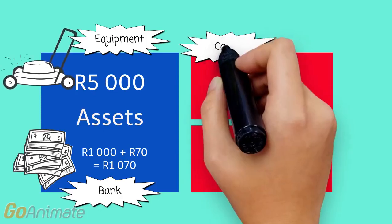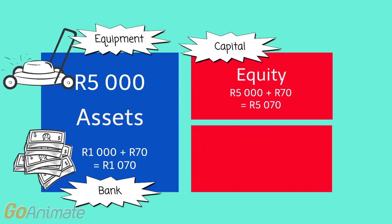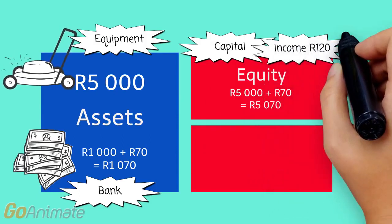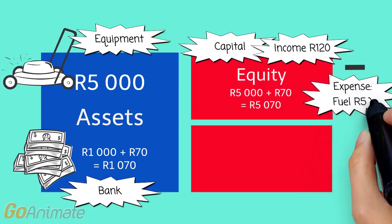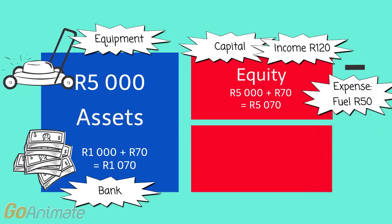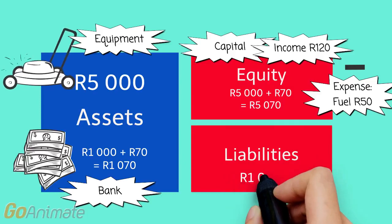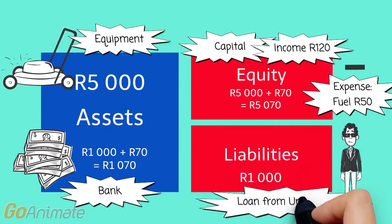...which is the 5,000 capital she introduced when she bought the lawnmower, plus the 70 rand, which is the difference between the 120 rand income and the 50 rand fuel expense. Finally, her liabilities are 1,000 — this is the loan from Uncle Bob.